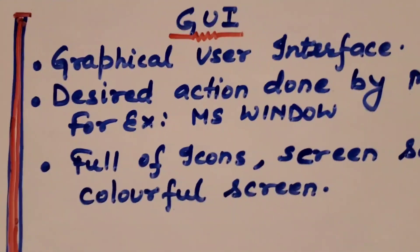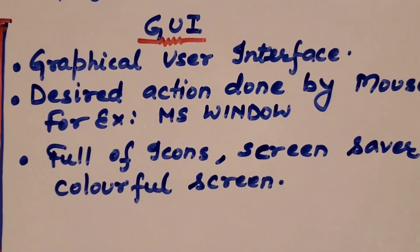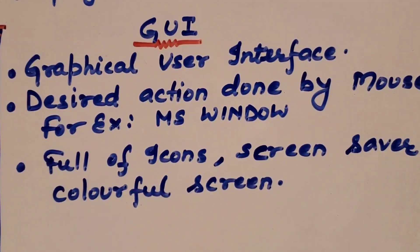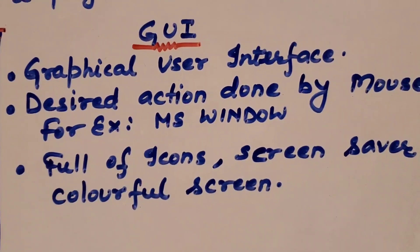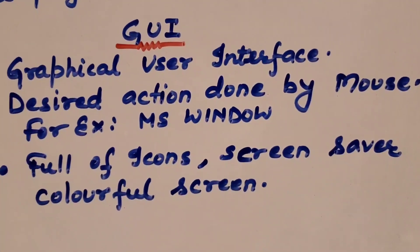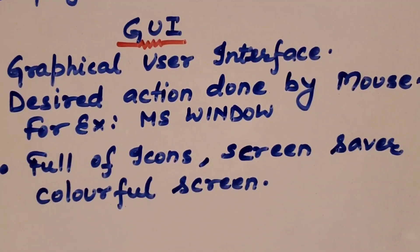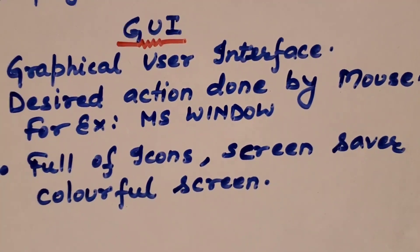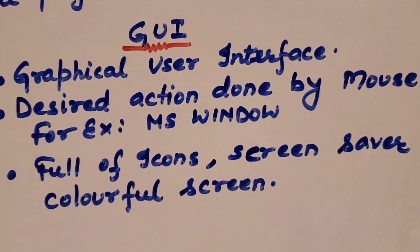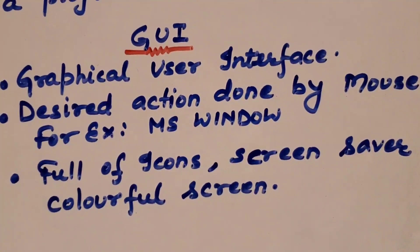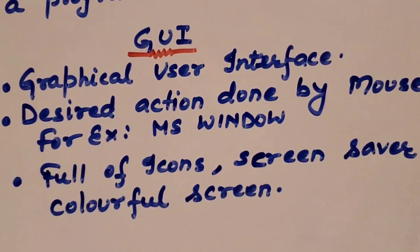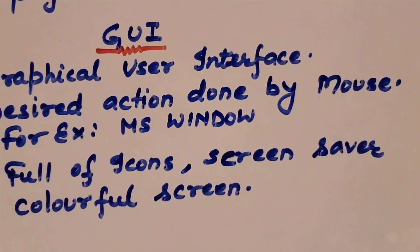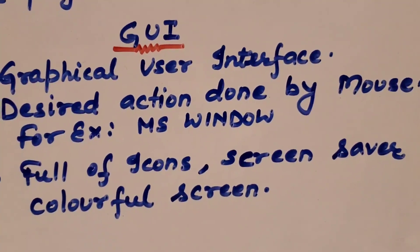The other one is GUI — Graphical User Interface, which you have already studied. All the actions you want to do on a computer will be done by mouse clicks, or maybe keyboard as per your requirement. Examples are all MS-Windows versions like Windows 7, Windows 8, Windows 10, Windows Vista, Windows XP — every one of them. All are examples of GUI. The screen is full of icons, screen savers, interesting colorful options, graphics, and animations.